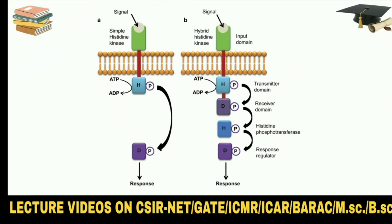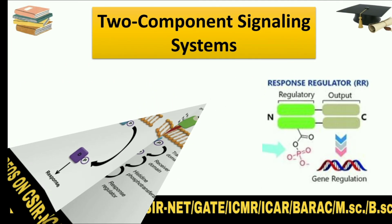The canonical two-component signaling system is composed of a transmembrane sensor histidine kinase which regulates the activity of a response regulator. In the transmembrane sensor histidine kinase, a conserved carboxy-terminal histidine kinase domain catalyzes autophosphorylation, with a phosphoryl group being transferred from ATP to a conserved histidine residue. This phosphoryl is then transferred to an aspartate residue in the conserved receiver domain of the response regulator, activating its associated effector domain.